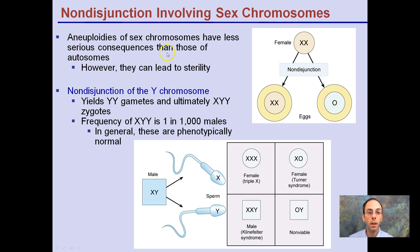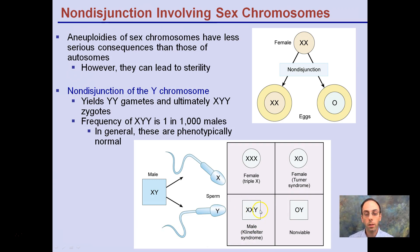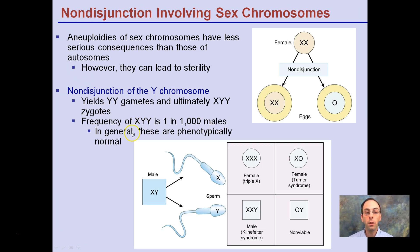Non-disjunction involving sex chromosomes can lead to sterility, such as when a female has three X chromosomes, or just one X — Turner syndrome. A male can't survive with only a Y chromosome, since Y has only about 15 genes while the X chromosome has over 2,000 genes. Males with two X's and a Y is another syndrome that can occur. Non-disjunction can also yield double-Y gametes, and XYY zygotes occur at a frequency of 1 in 1,000 males. These are phenotypically normal because the Y contains so few genes.